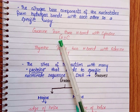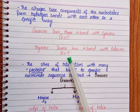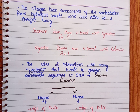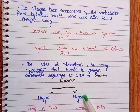A mnemonic to remember the base pairing: 'Cars in garage, apple in trace.' From this you can easily remember the pairs. Another important feature of the secondary structure is the grooves, which are the sites of interactions with proteins — the sites where proteins bind to specific nucleotide sequences in DNA.